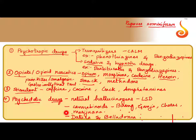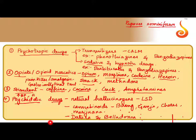Exactly opposite to depressants are stimulants. A stimulant is something which makes you high. Caffeine, cocaine, crack, and amphetamines are some examples used as stimulants. Their basic effects include an increase in blood pressure, an increase in basal metabolic rate (BMR), and they also help in weight loss mechanisms.